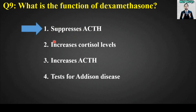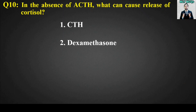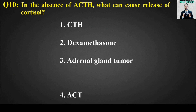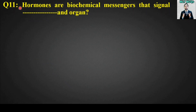MCQ number 10: In the absence of ACTH, what can cause release of cortisol? Options are: CTH, dexamethasone, adrenal gland tumor, or ACTH. The right answer is option number 3, adrenal gland tumor. In the absence of ACTH, the adrenal gland tumor can cause release of cortisol.